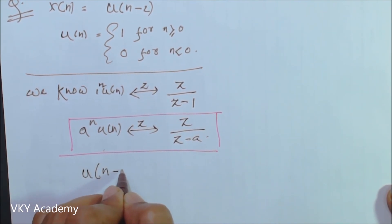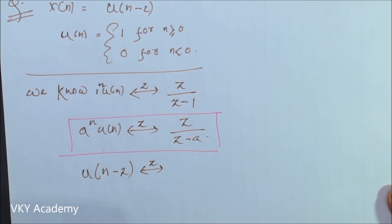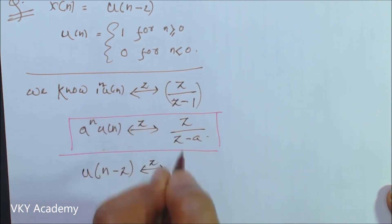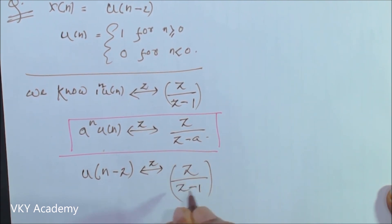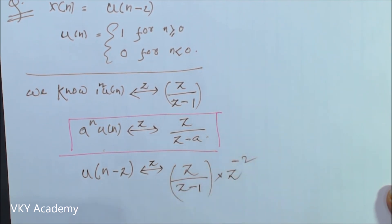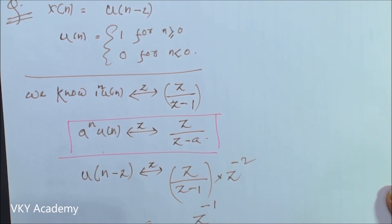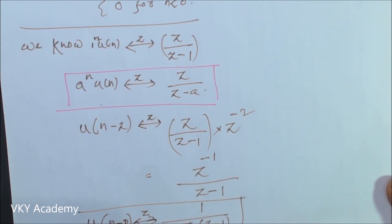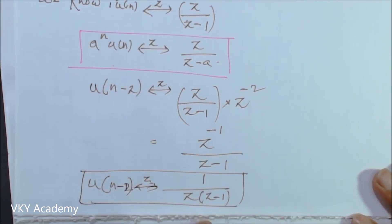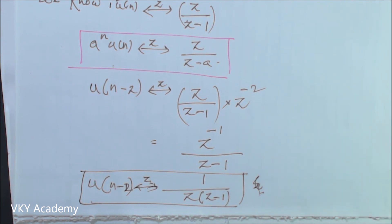According to the shifting property of Z transform, the Z transform of u of n minus 2 will be the original Z transform of u of n — that is z upon z minus 1 — multiplied by z to the power minus 2. This gives z to the power minus 1 divided by z minus 1, which can also be written as 1 over z into z minus 1. This is the Z transform of u of n minus 2. Thank you.